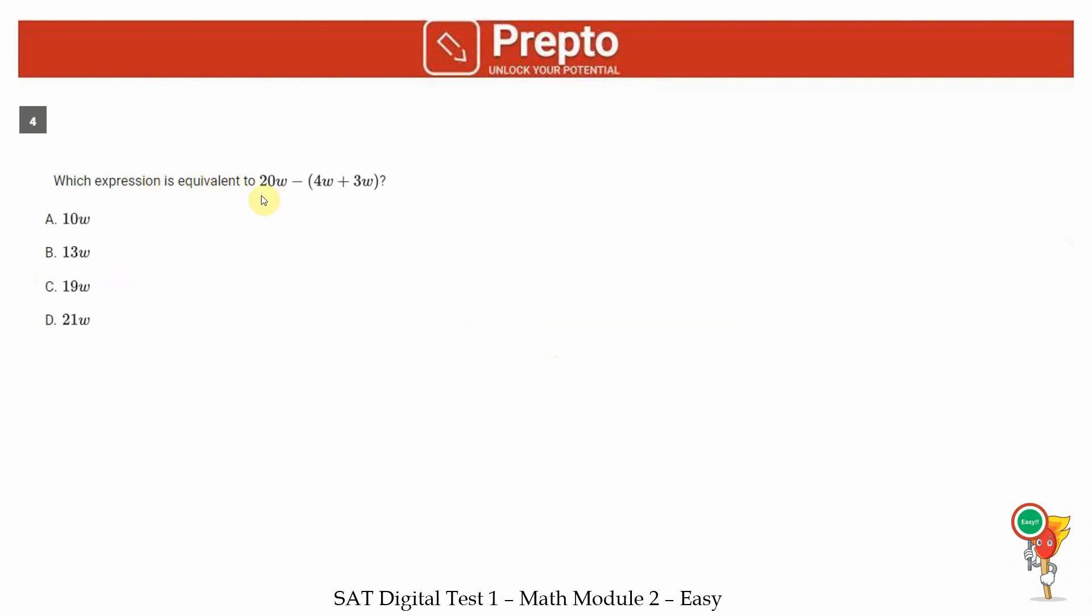Fourth question, which expression is equivalent to this value? So you have 20W minus 13W. This will combine to get 7W.